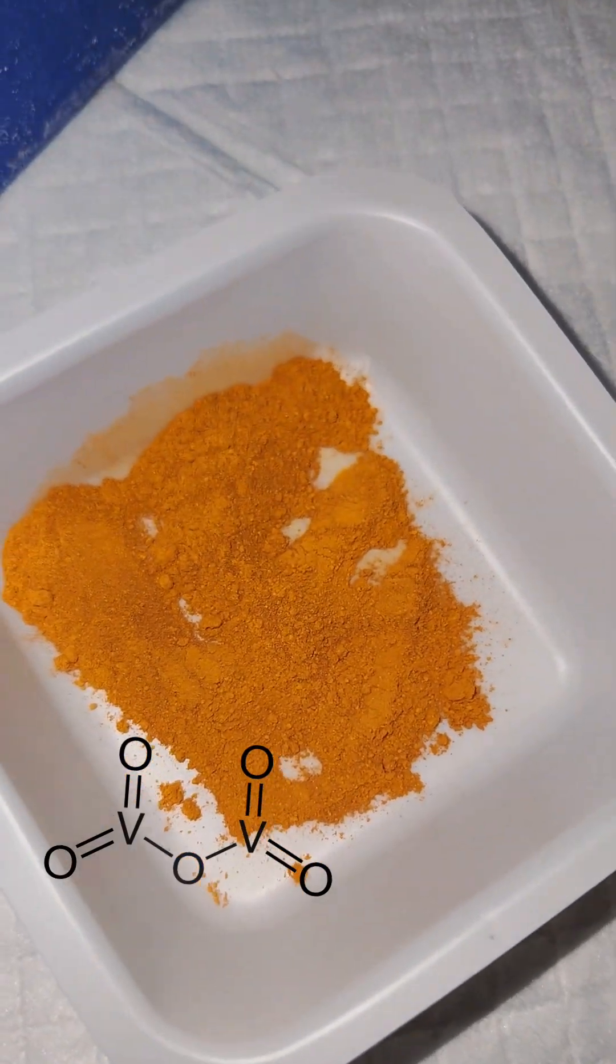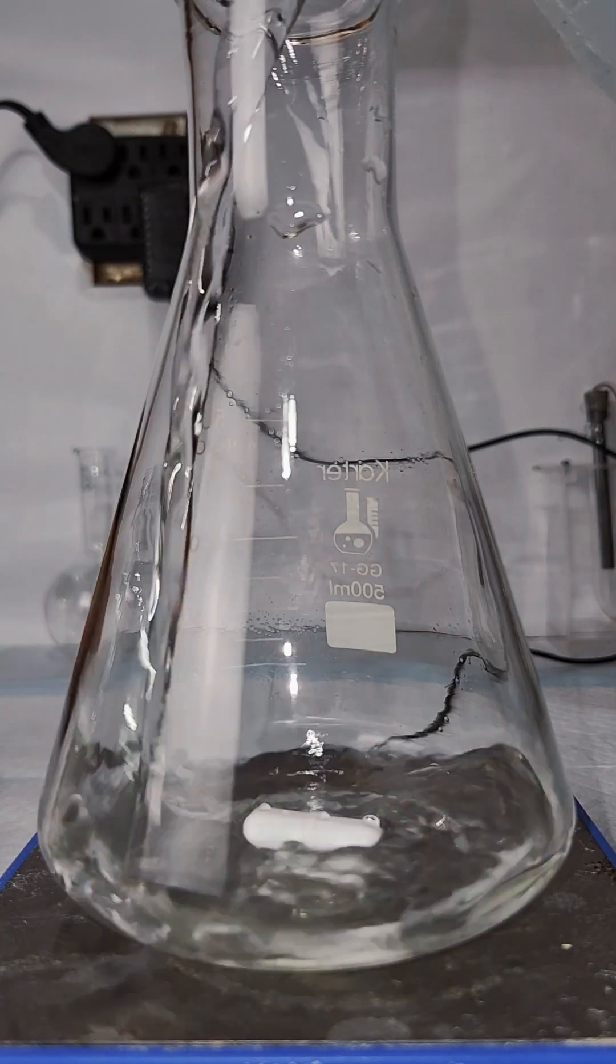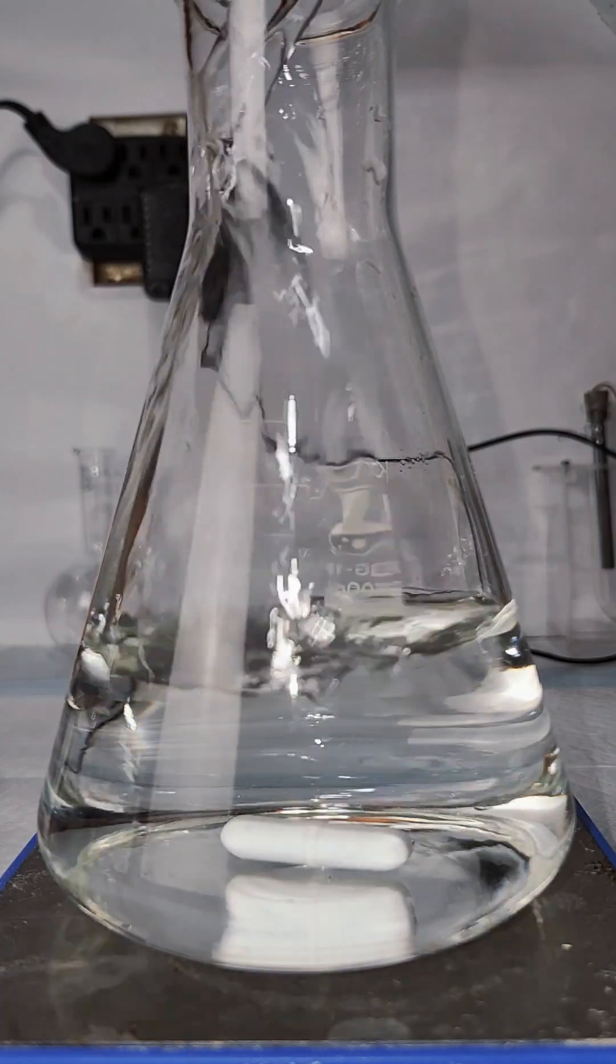To do this demo, I start with the yellow powder vanadium pentoxide, which puts vanadium in its plus five oxidation state.